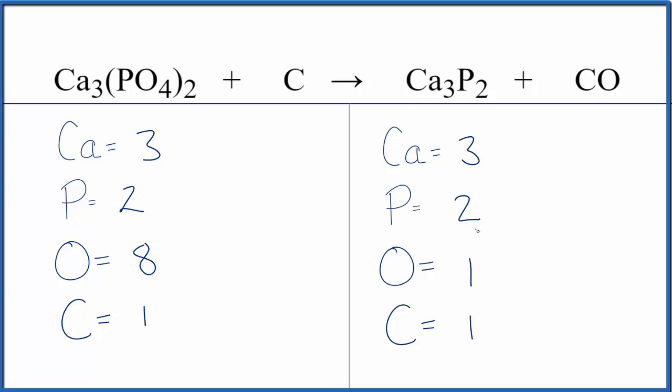We have the number of atoms on each side. Now let's change the coefficients to balance the equation. If we put an 8 in front of the CO, that would balance the oxygens. So one times eight gives us eight oxygen atoms.